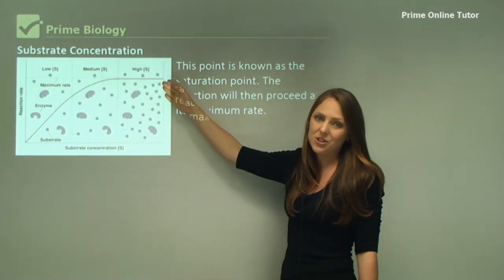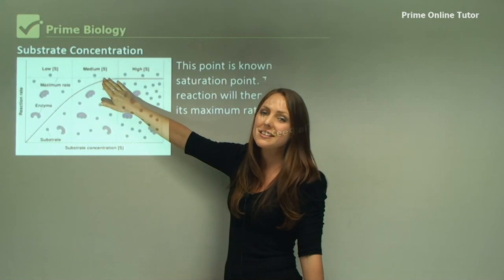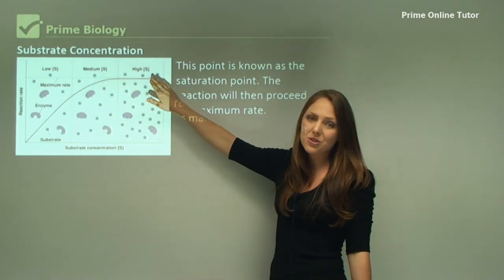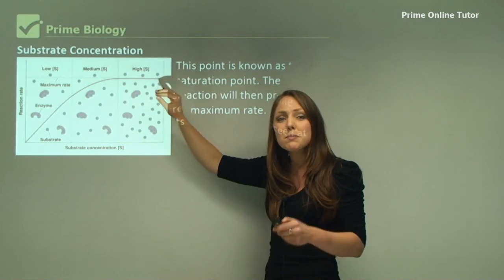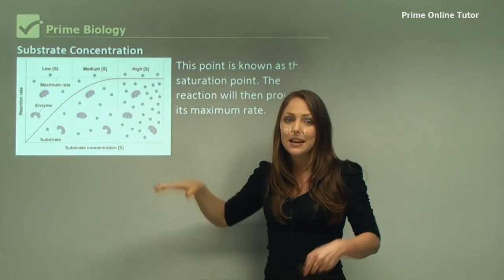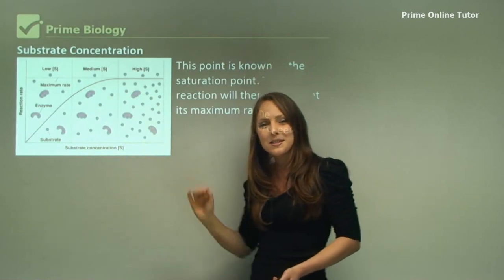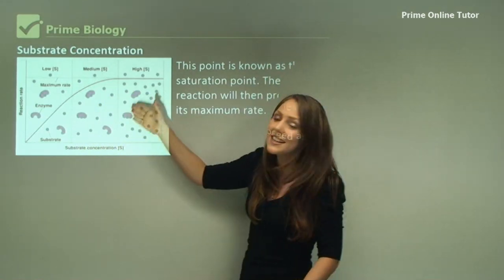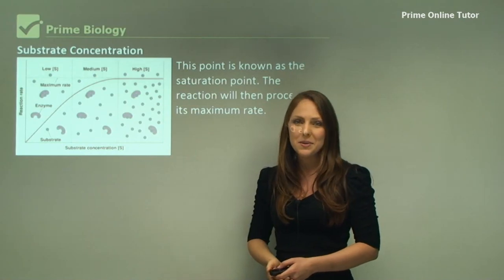At the highest substrate concentration, we can see here that the reaction rate increases, but with this high substrate concentration, the graph actually plateaus. That doesn't mean that the rate decreases. In fact, it means that the reaction is still happening at its maximum rate. All of the enzymes are taken up with substrate. There's no more enzymes to be used up in this reaction.